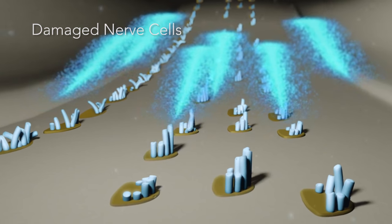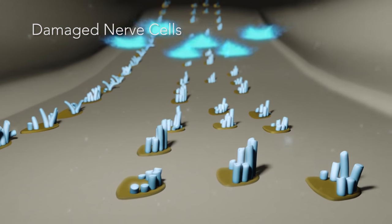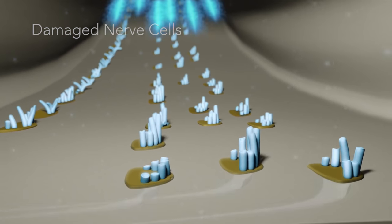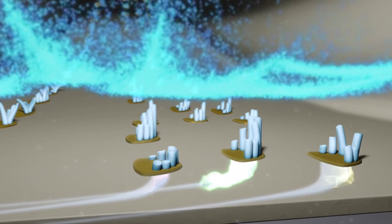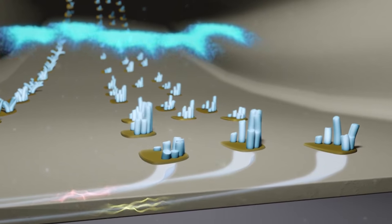In the affected areas, the nerve cells are no longer stimulated effectively, resulting in not enough or distorted impulses being transmitted to the brain for processing.